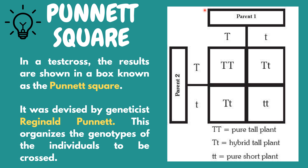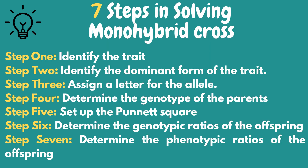We still need to learn more on the steps in solving a monohybrid cross problem. There are 7 steps that we need to follow. First, identify the trait. Second, identify the dominant form of the trait. Third, assign a letter for the allele. Fourth, determine the genotype of the parents. Fifth, set up the Punnett square. Sixth, determine the genotypic ratios of the offspring. And lastly, determine the phenotypic ratios of the offspring.